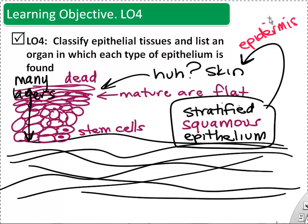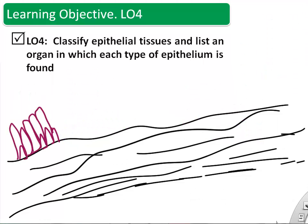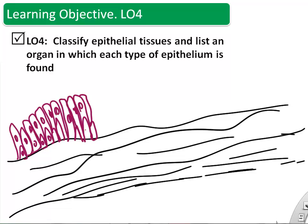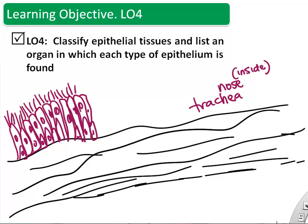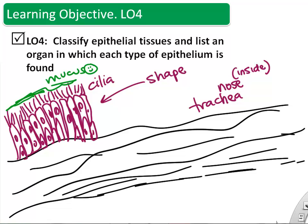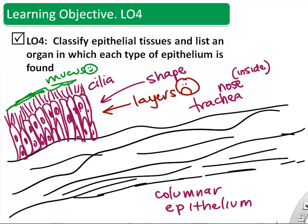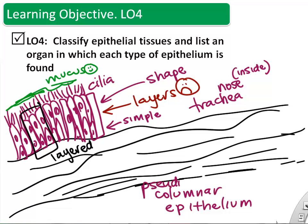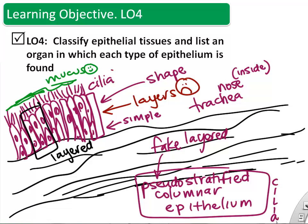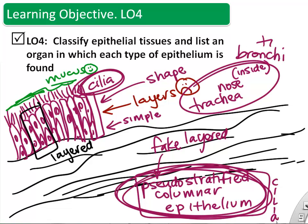That's how we describe epithelia: based on the number of layers and the shape. Another important example seen throughout this class and in lab is in the lungs — the trachea, bronchi, and inside the nose and nasal cavity. These have long columnar cells with tons of cilia that move mucus. When people tried to determine if they're layered or not, they got confused — some look simple columnar and some look stratified columnar. So they coined the term pseudo-stratified, meaning fake-layered. Pseudo-stratified columnar epithelium is typically found in your respiratory tract.